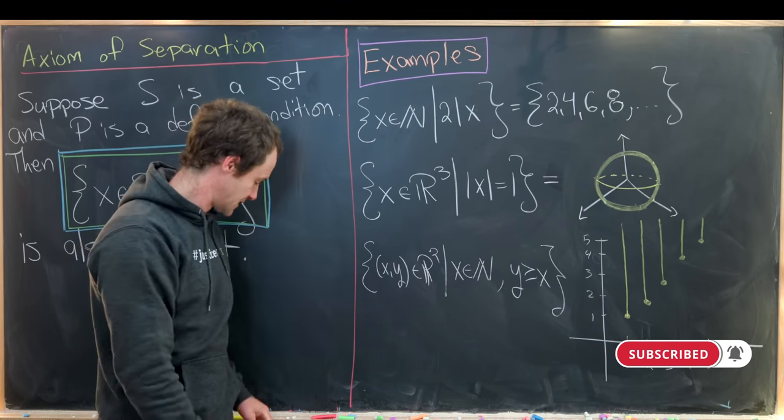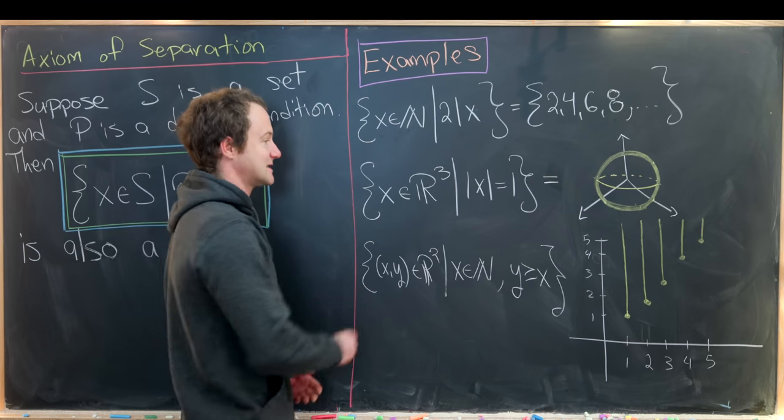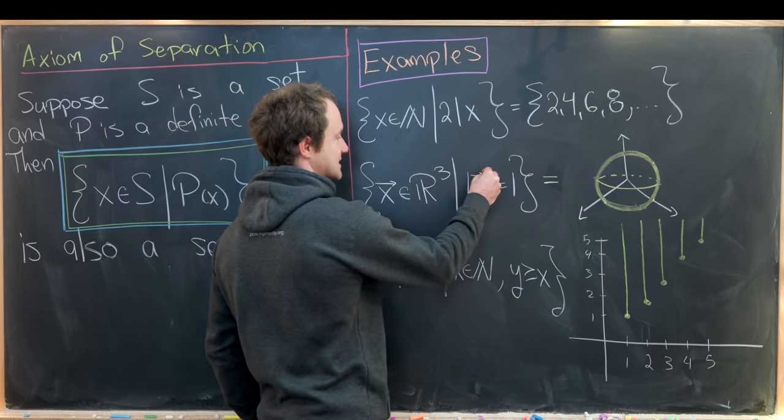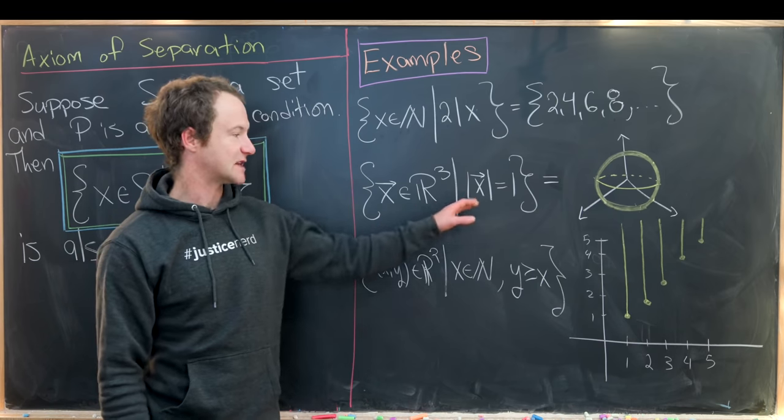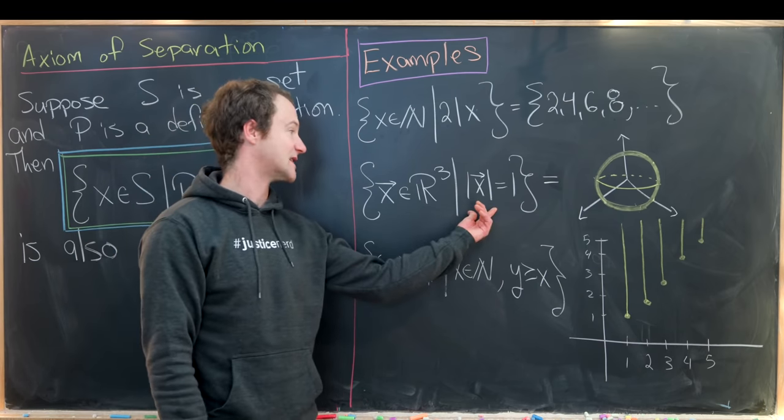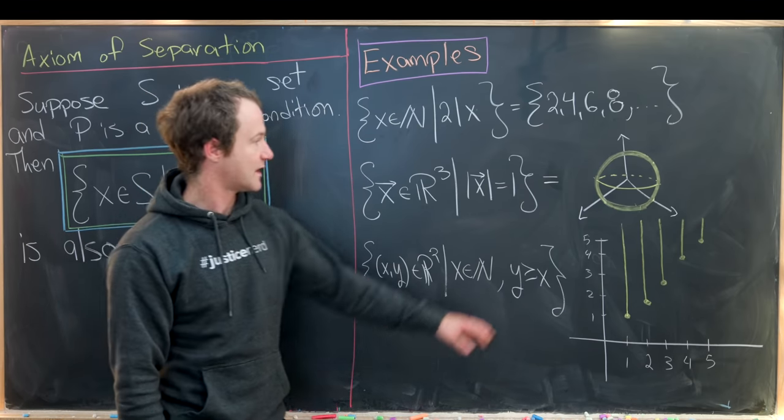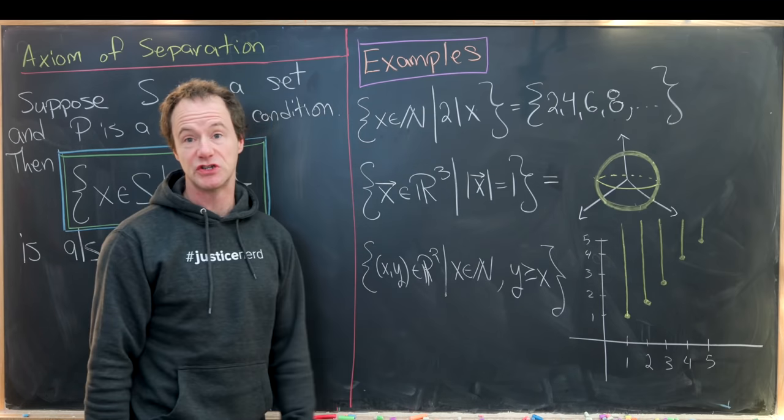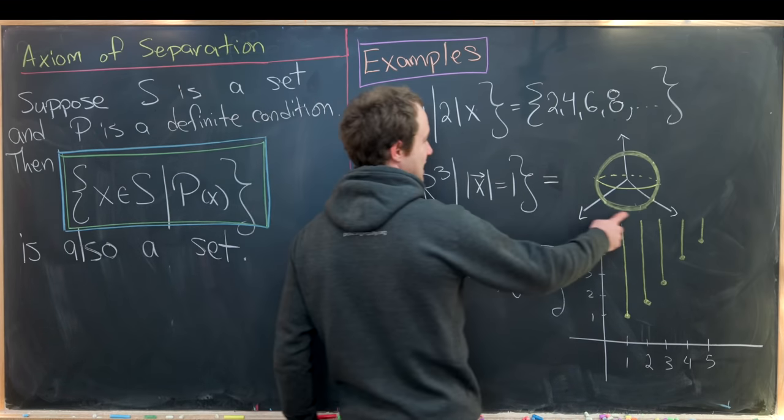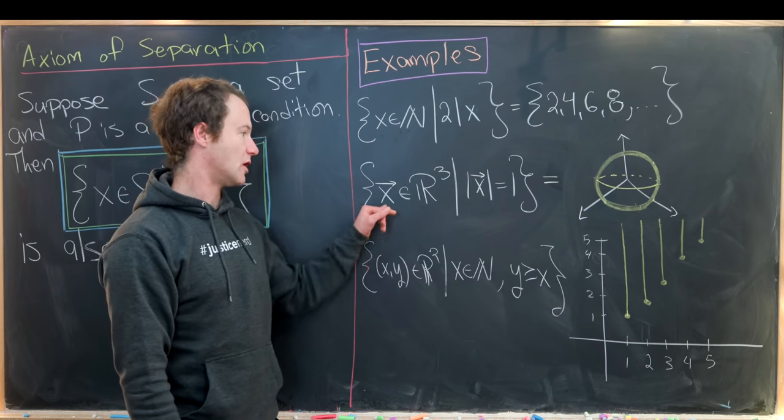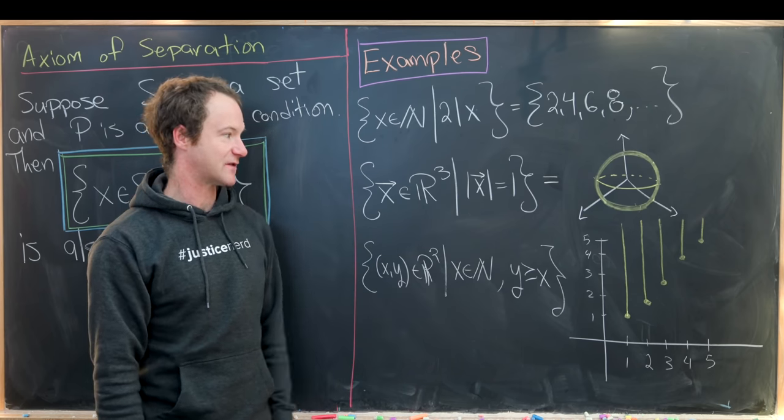For our next example, let's take all X in R3, maybe I'll put an arrow over it to make sure we know that this is like a vector, satisfying the condition that the size of X is equal to 1. Well, what set is that? That's just going to be the sphere, the 2-sphere. So notice I've got a sphere here, radius 1 centered at the origin. So those will be all of the points in R3 that satisfy this condition.